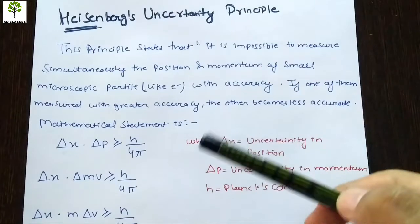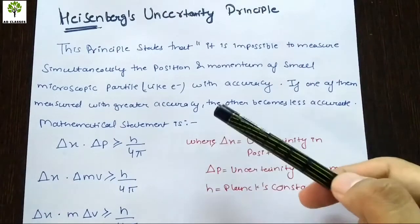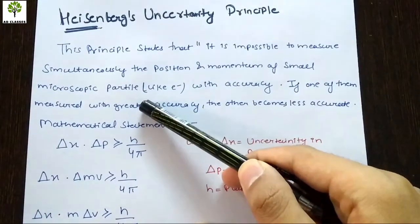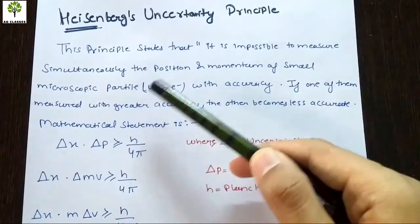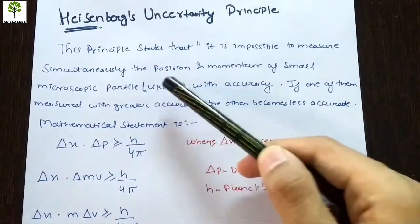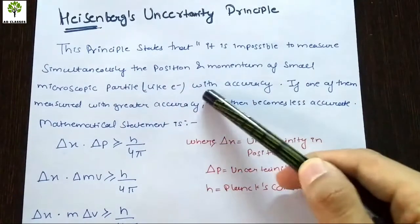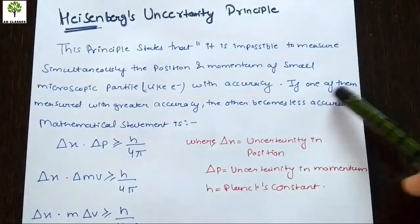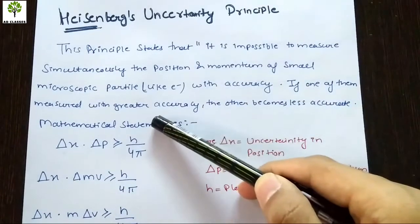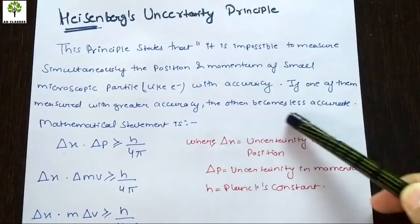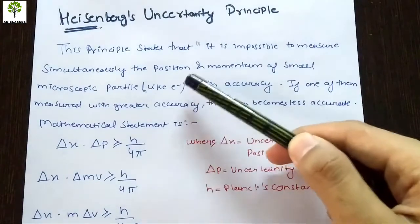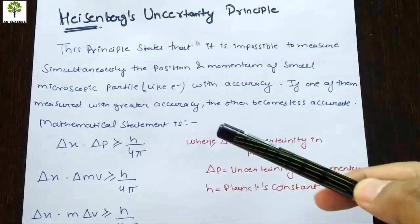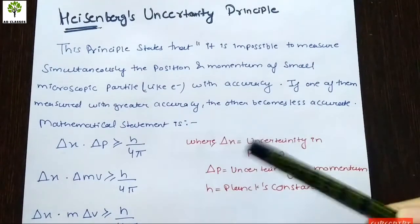This simply means that if we talk about a microscopic element or particle — for example, an electron — then we can't find out the position and momentum simultaneously with accuracy. If one of them is measured with greater accuracy, the other becomes less accurate. If we find out the position accurately, then we can't find out the momentum accurately, and vice versa.